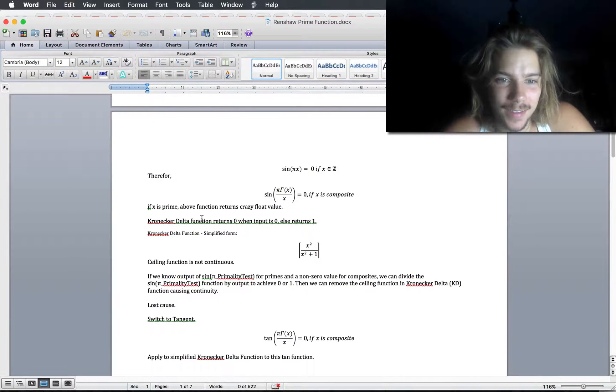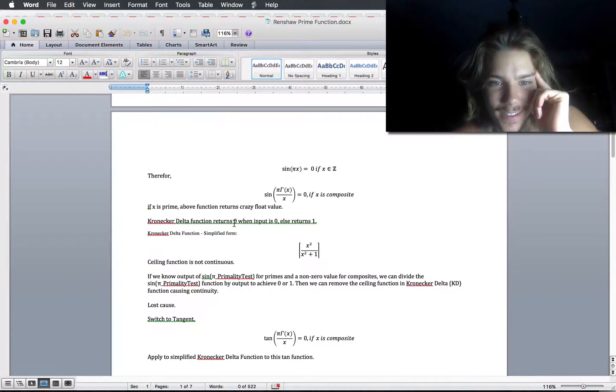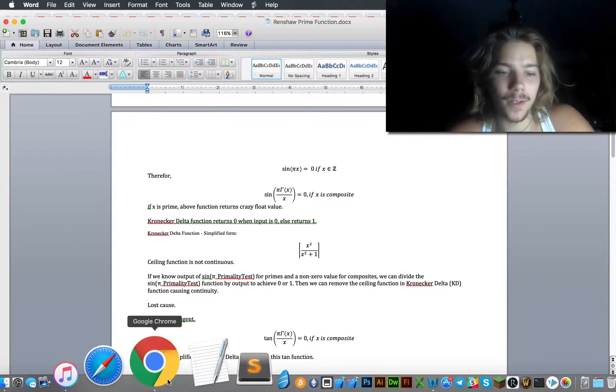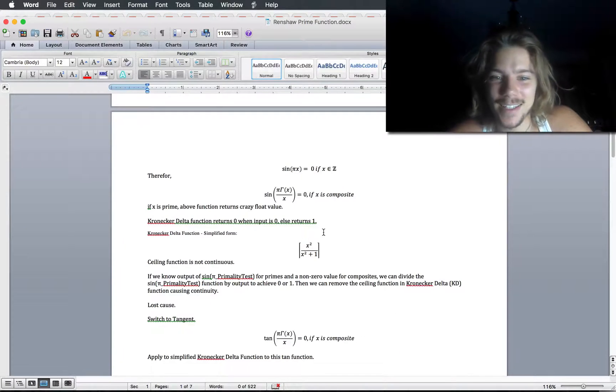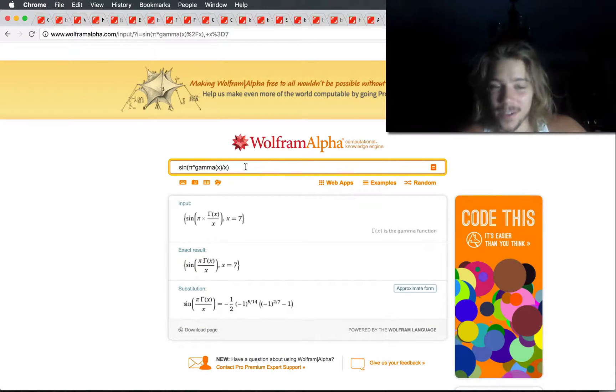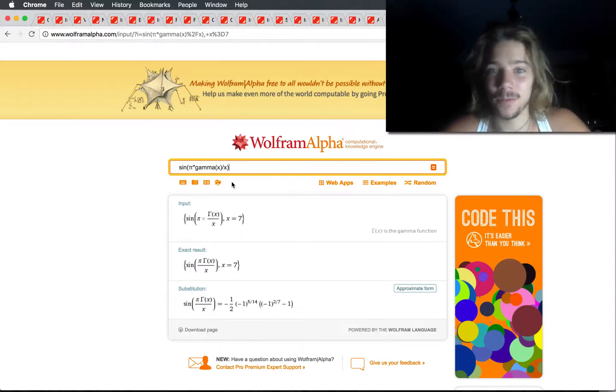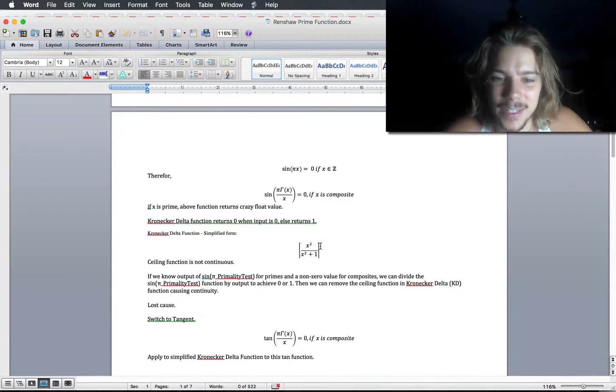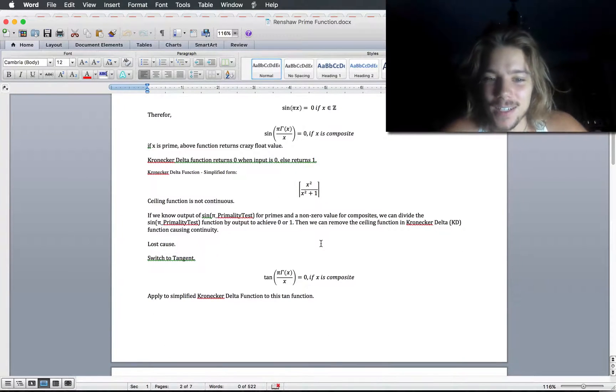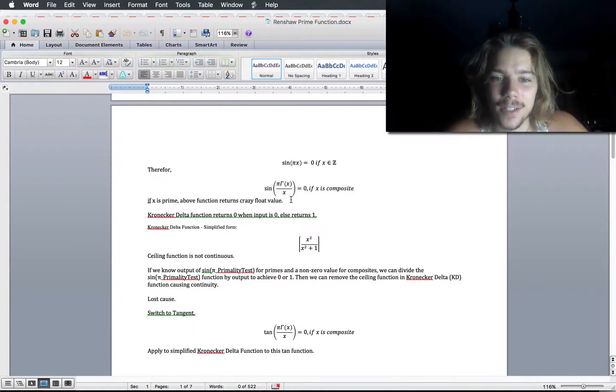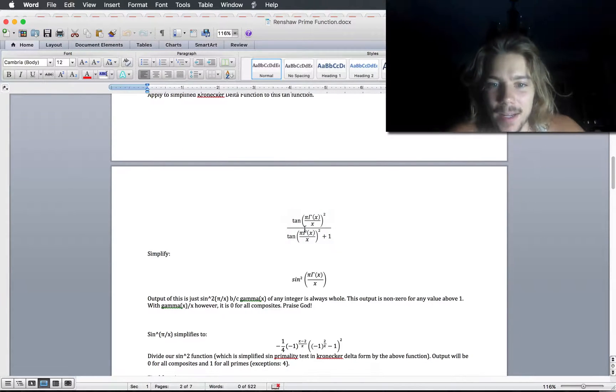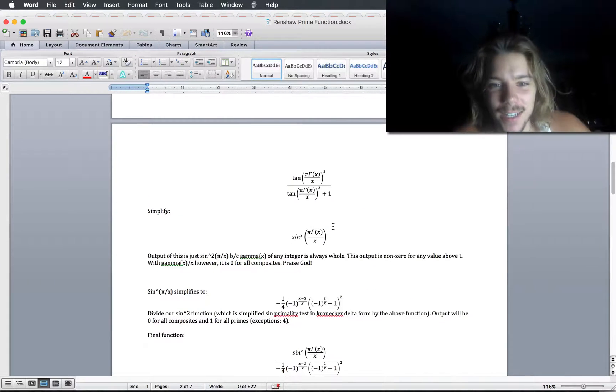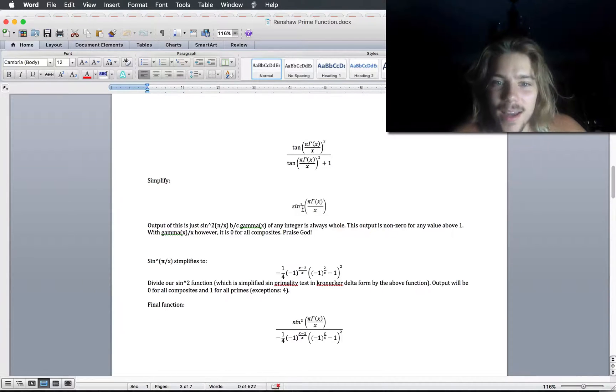So, with this knowledge, I was able to create a few cool things. For one, if you take the sine of pi times gamma x over x, you will get 0 for composites. And I'll give you a quick demonstration. With primes, you will get something that's not 0. You'll actually get the sine of pi times 1/7. And being able to figure out what that value was allowed me to do some interesting things. So I started using the Kronecker delta function, which returns 0 when you put 0 in, and for everything else it returns 1, which is the ceiling of x squared over x squared plus 1.